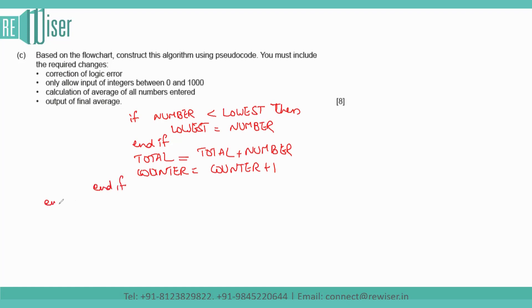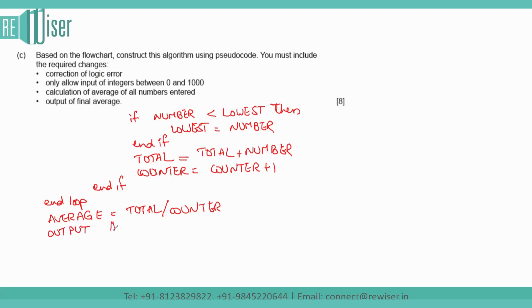After this, END LOOP — stopping the loop — and then find the average: average = total / counter, where counter stores the number of values entered. Then OUTPUT highest (as given in the flowchart), OUTPUT lowest, and finally OUTPUT average for the fourth required point.